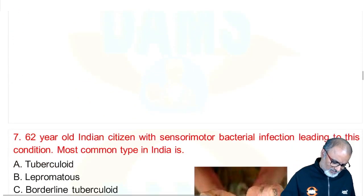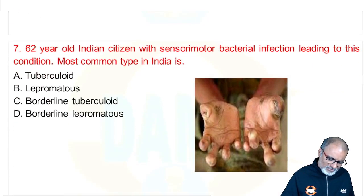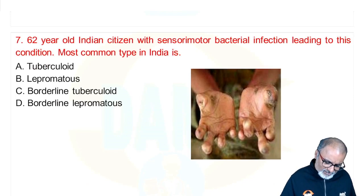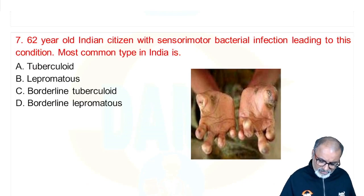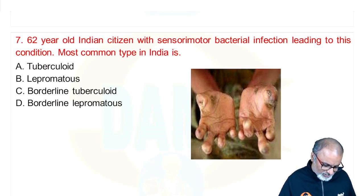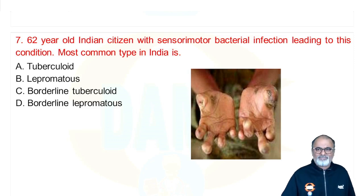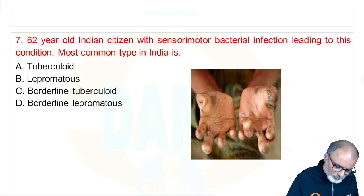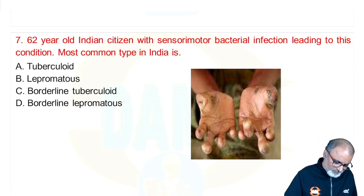Next: a 62-year-old Indian citizen with sensorimotor bacterial infection — most common type. This is a type of leprosy. The most common type in India is borderline tuberculoid.